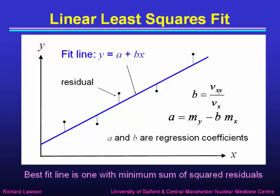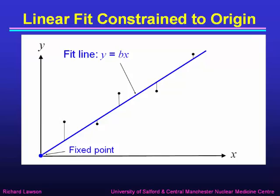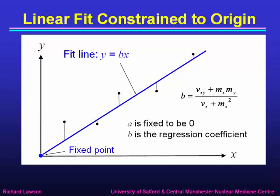There are plenty of programs that will do this linear least squares fit for you. Sometimes we want a line constrained to go through the origin. If we know the data has to go through x = 0, y = 0, then we could imagine pivoting the ruler at that fixed point, and we get a slightly different regression line. In this case the fit line equation is y = bx, since it must pass through the origin. Under these circumstances, b is given by the covariance Vxy plus the x mean multiplied by the y mean, divided by the x variance plus the x mean squared.